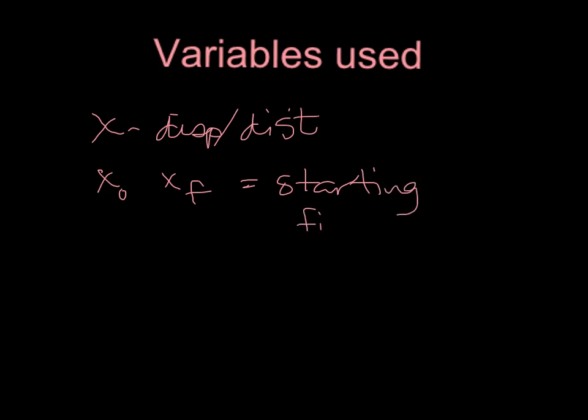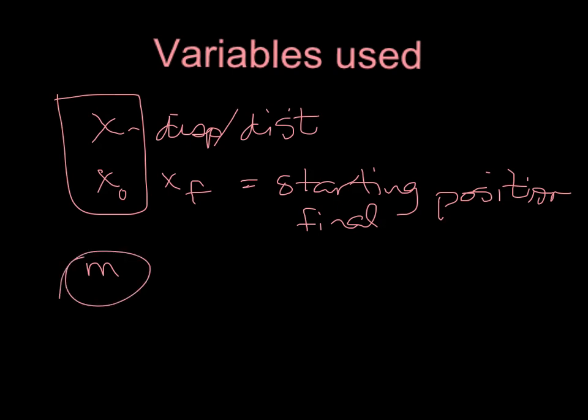So in equations, we have variables that substitute for these different terms. And if we're talking about displacement or distance, we're going to use x. So, that's going to be your displacement or your distance. If you see x naught and x final, that might mean your starting position or your final position. So x can also represent your position. But x is a distance factor. So it's going to be measured in meters.